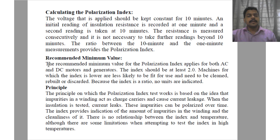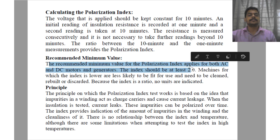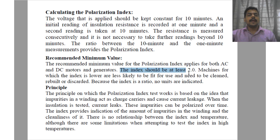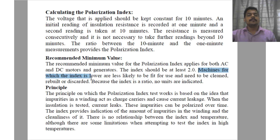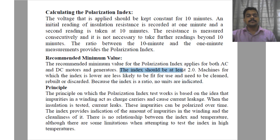The recommended minimum value of the polarization index applies for both DC and AC motors and generators. The index should be at least 2.0. Machines for which the index is lower are less likely to be fit for use and need to be cleaned, rebuilt, or discarded. Because the index is a ratio, no units are indicated.